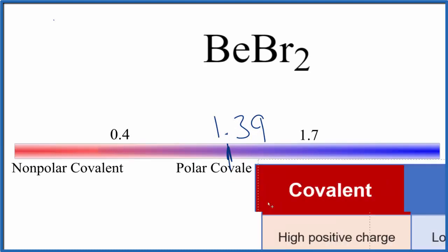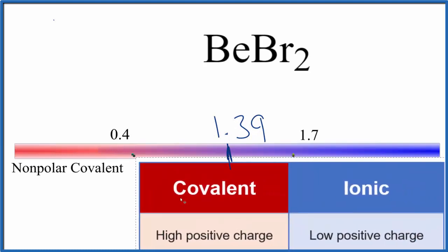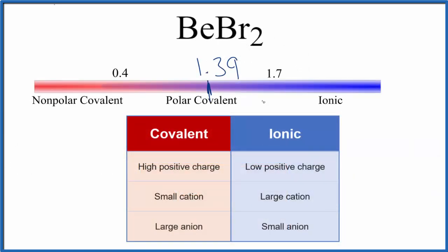We can also look at Fajans' rules to try to figure that out. So if we look at the positive charge, beryllium in group 2, that's 2+. So we have a pretty high positive charge.